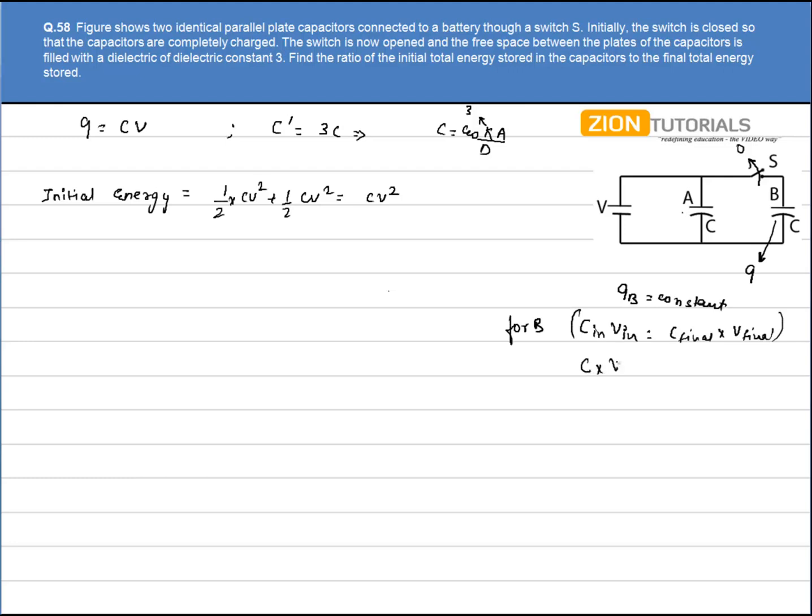So V final comes out to be V by 3. So the energy of B after the switch S is opened can be calculated by the formula half CV squared. Here capacitance is 3C, potential is V by 3 times V by 3. So this 3 is cancelled, so we have CV squared by 6 as the energy of B.